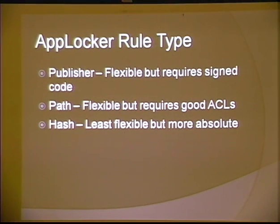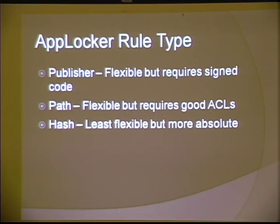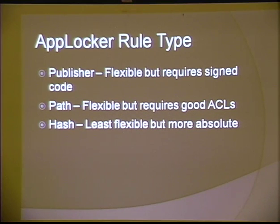Now that we've addressed the administrator issue, let's talk about applying AppLocker rules. There are three different rule types: Publisher, which is based on signed code; Path, where you define anything in say C:\Program Files to allow it to run; or Hash. Publisher and path are pretty flexible — if you add new things to a path that's already allowed, it gets to run. If something from the same software maker that's already signed has been created, it can run. Hash is least flexible but sometimes a necessary evil — if it matches this hash, it's allowed to run.